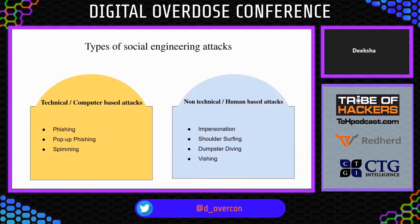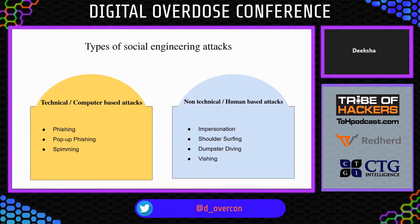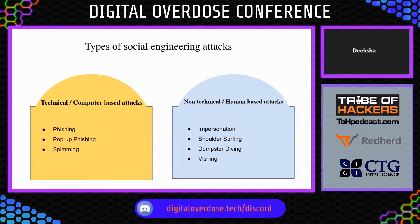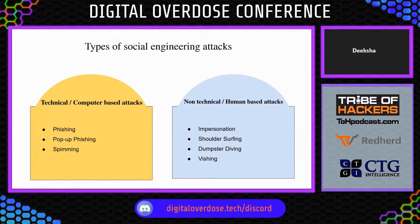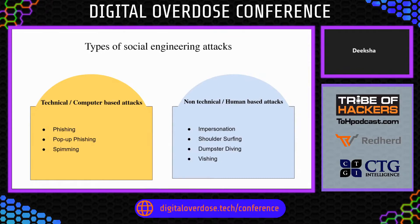There are no fixed number of social engineering attacks. The list goes on depending on how smart and creative the attacker is. I have listed a few attacks here, separated into two different groups. The first group is technical or computer-based attacks, which include phishing, pop-up phishing, and spimming. The next group is non-technical or human-based attacks, which includes impersonation, shoulder surfing, dumpster diving, and vishing.